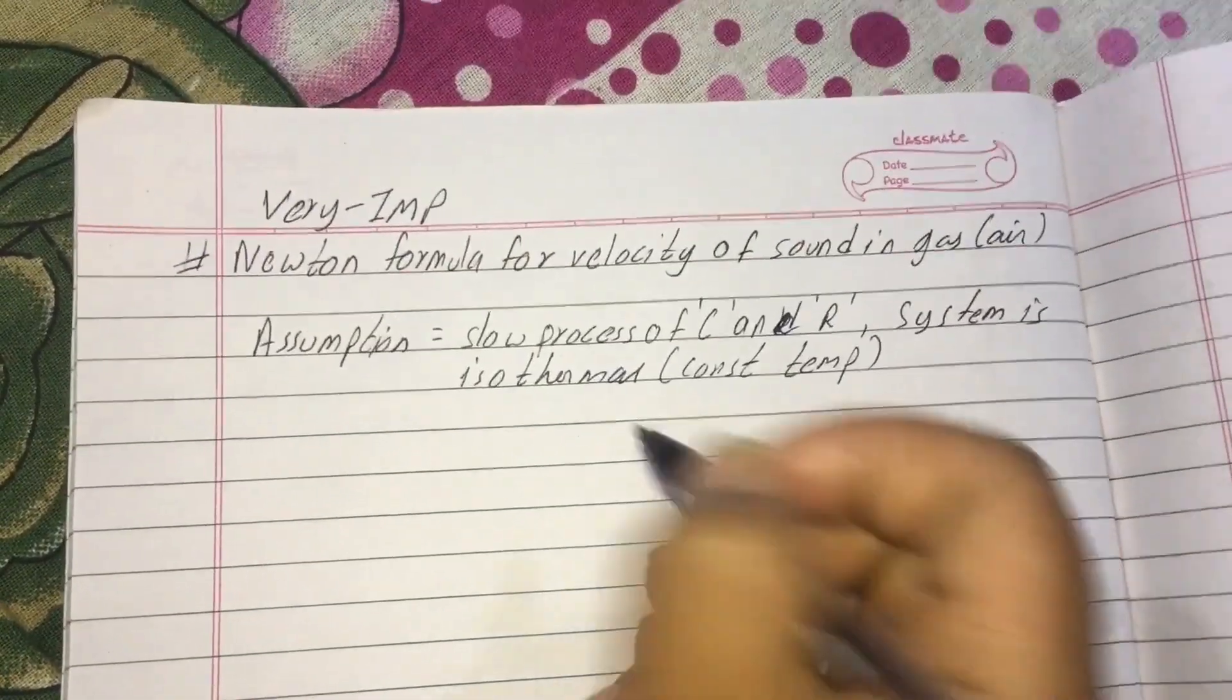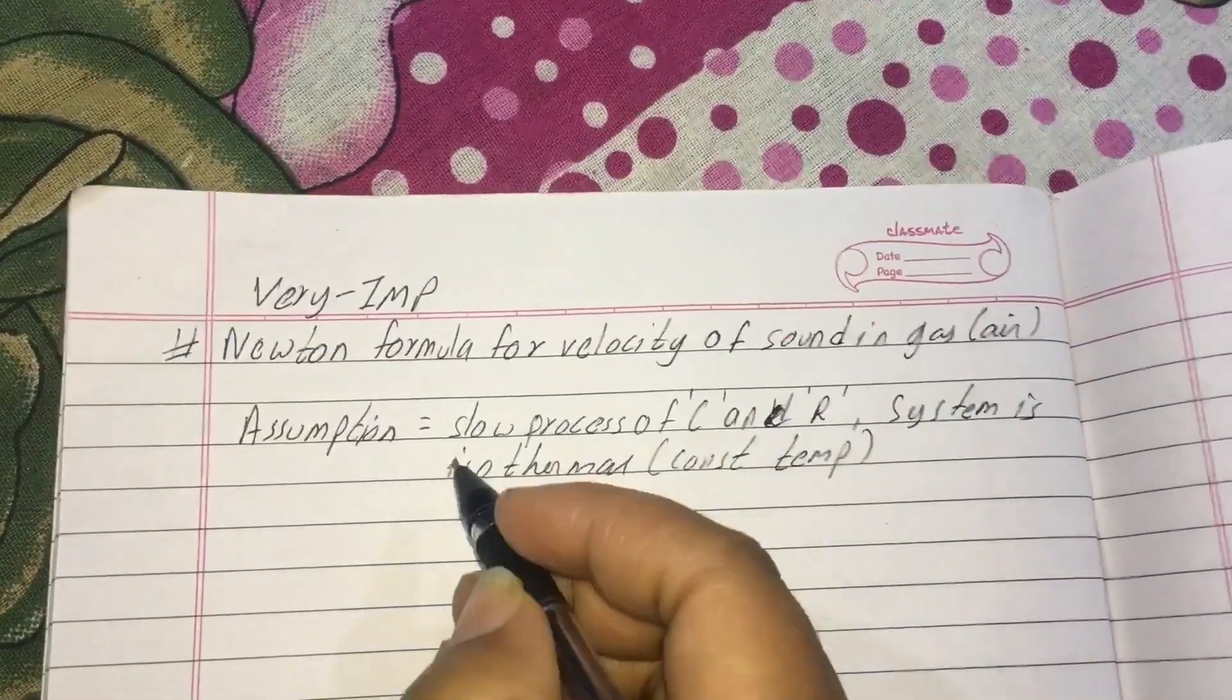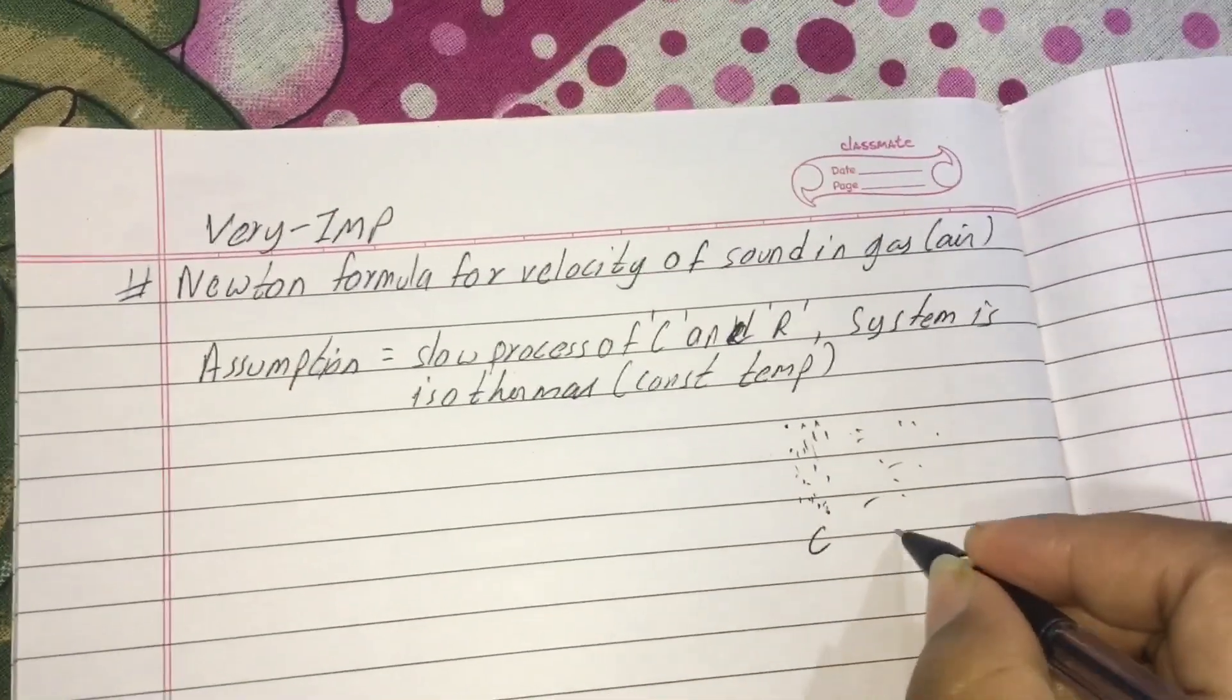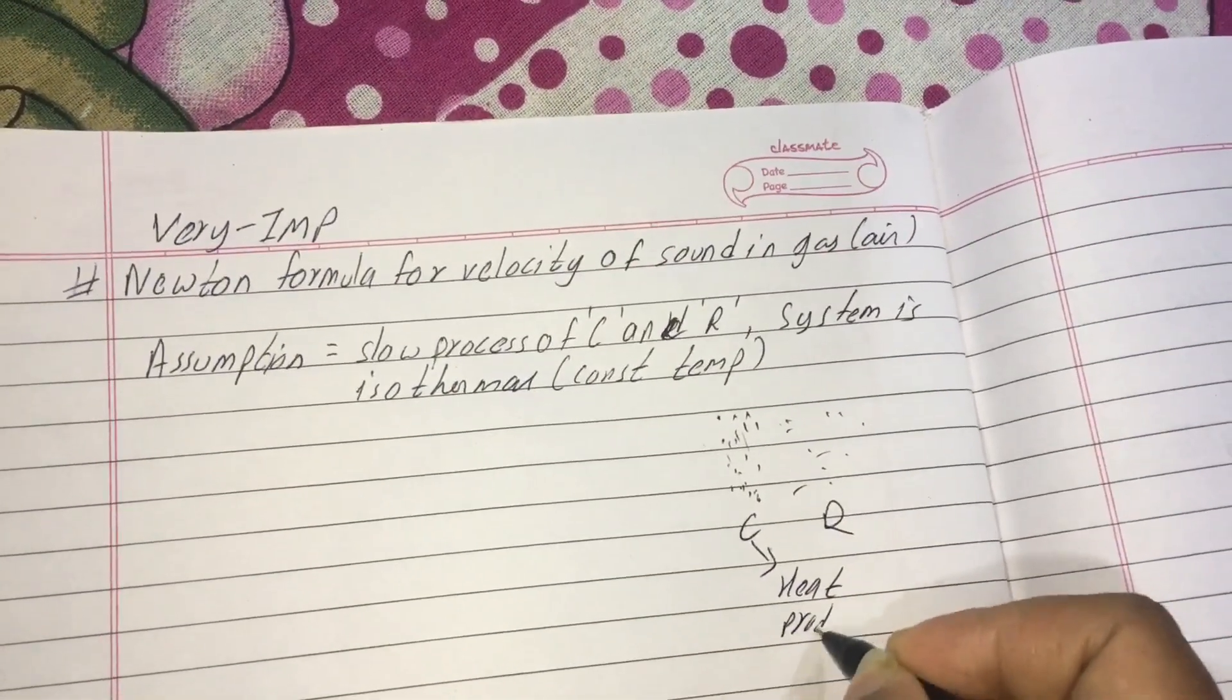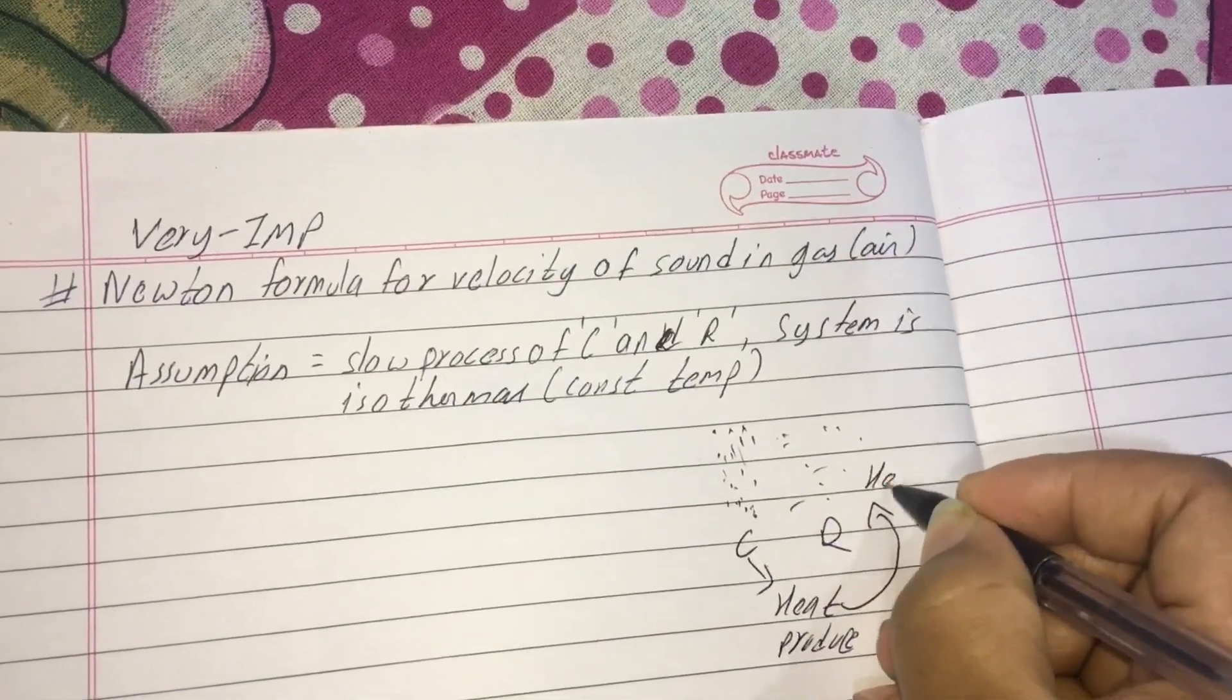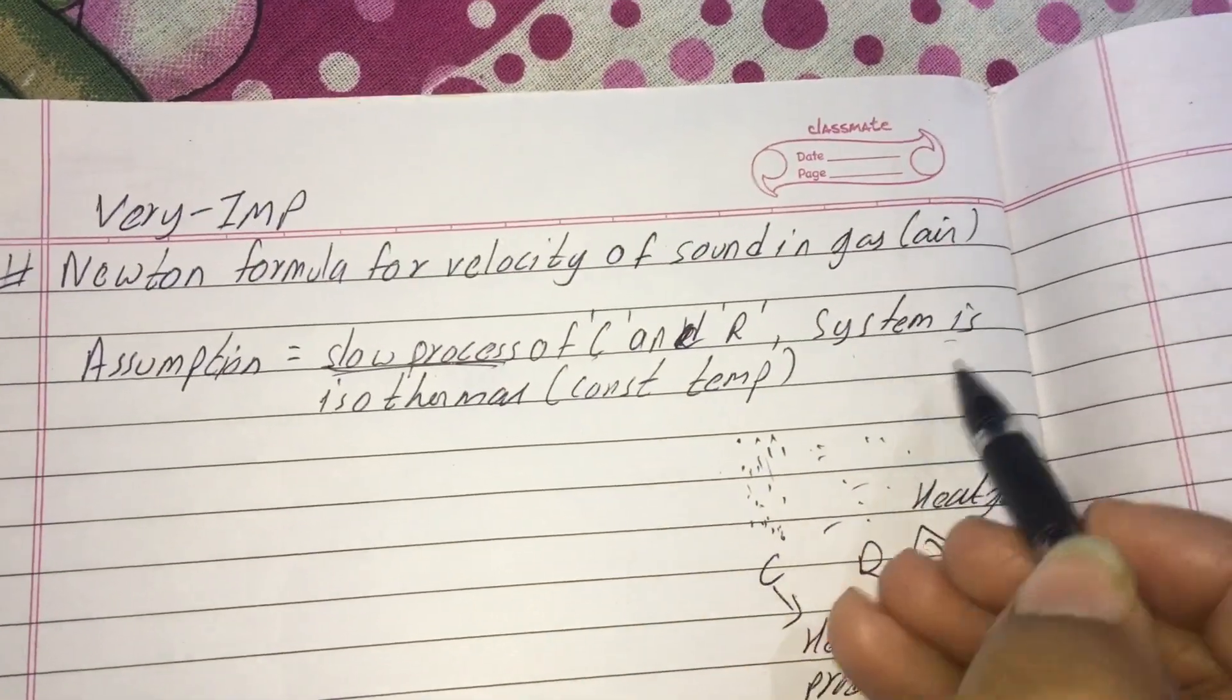So let's continue without any delay. First, the Newton formula will be velocity of sound in gas. This concept is important. Sound is a longitudinal wave, which means compression and rarefaction. What happens in compression? Heat is produced. Heat gain. This is the slow process of compression and rarefaction. The system is isothermal.